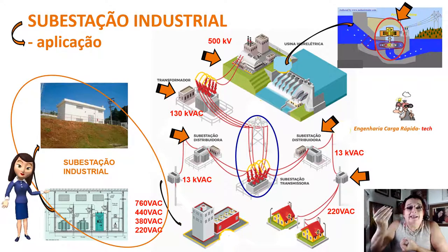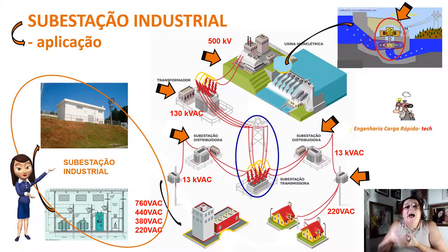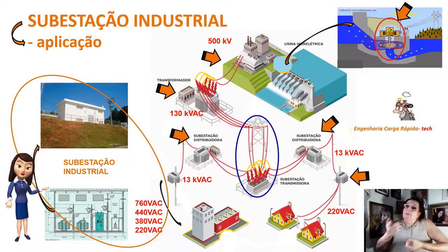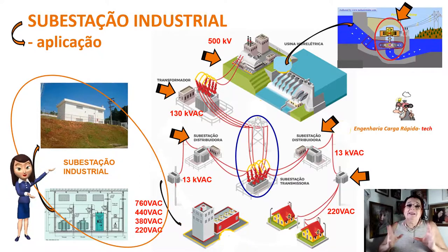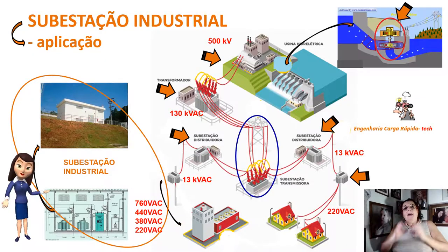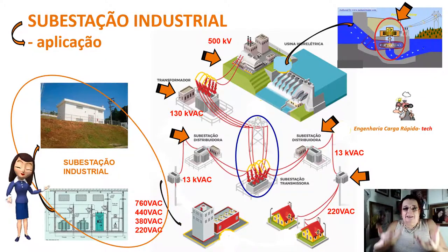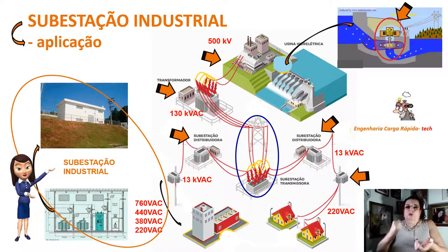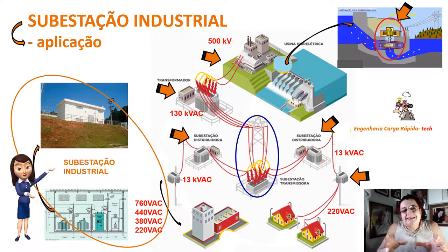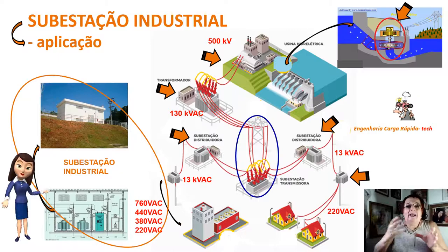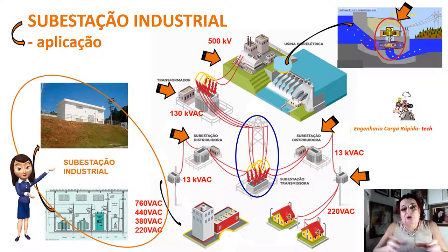Quanto maior a tensão, menor o diâmetro e a seção do cabo. Por isso é interessante termos máquinas industriais com 380 ou 440 volts. Quem alimenta essas máquinas é a subestação industrial da própria indústria, sendo a responsabilidade de manutenção e aquisição de equipamentos da própria indústria.